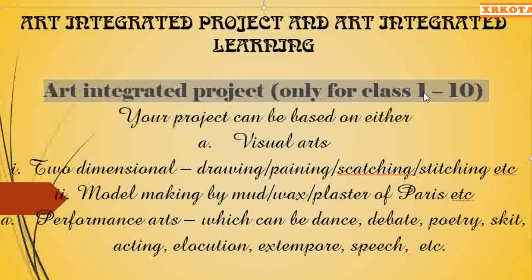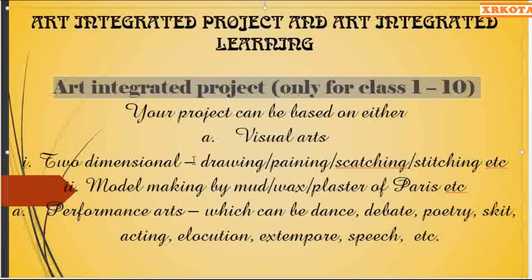Class 11 and 12 need not make any project. They already have their own projects in languages in the form of ASL, in commerce, science, mathematics, physical education, computer science, and other subjects. So every subject has a project, and that project will include art integrated learning. Now, the art integrated project can be based on either visual arts or performance art. Visual art can be two-dimensional, which includes drawing, painting, sketching, and stitching.